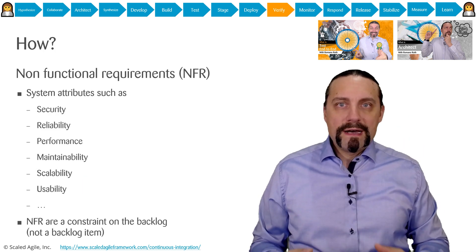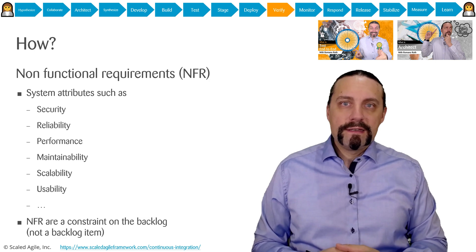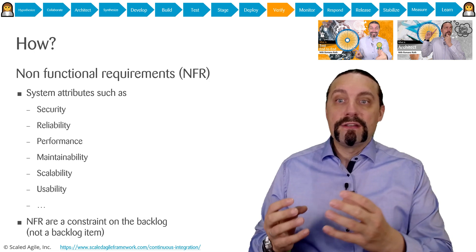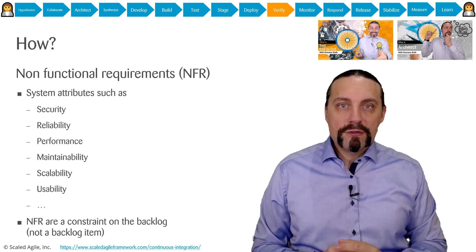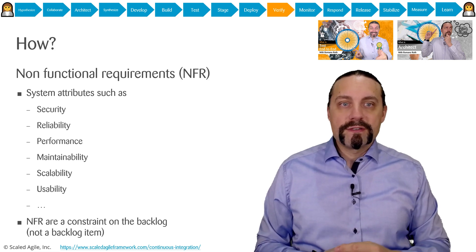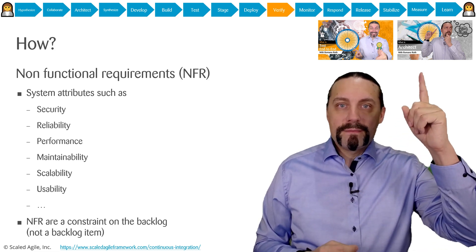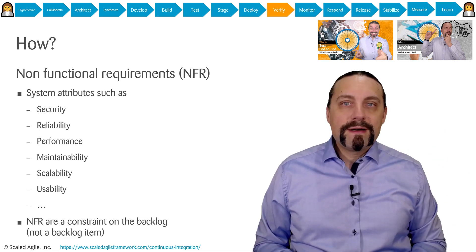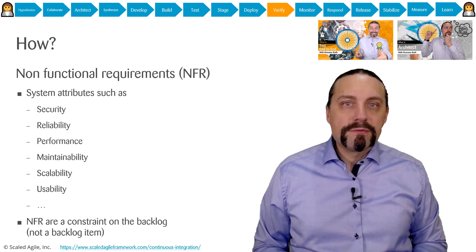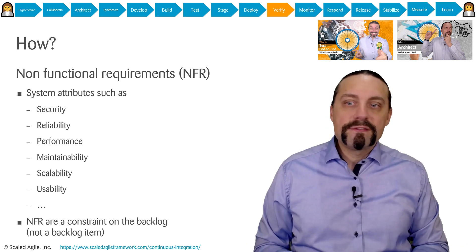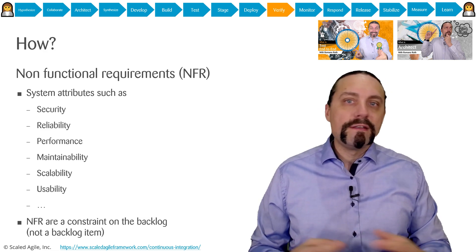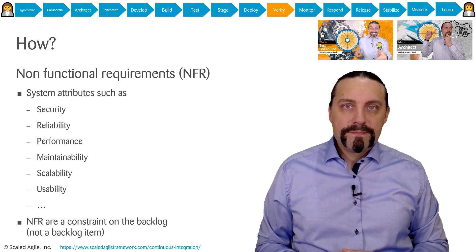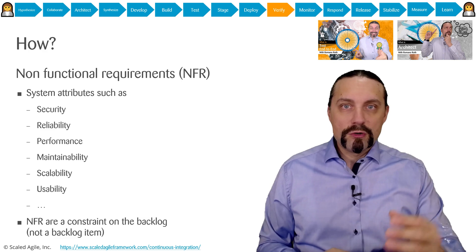When we talk about verifying the functionality in production, we of course also need to verify the non-functional requirements. We talked already about testing the non-functional requirements in my video about architecture and also about test end-to-end. Non-functional requirements are system attributes like for example security, reliability, performance, maintainability, scalability, usability, and so on. These non-functional requirements are of course a constraint on the whole backlog.